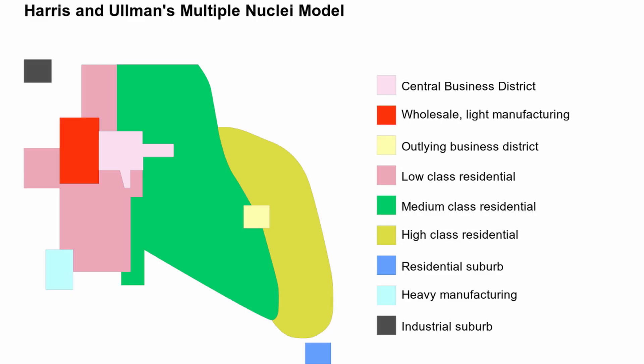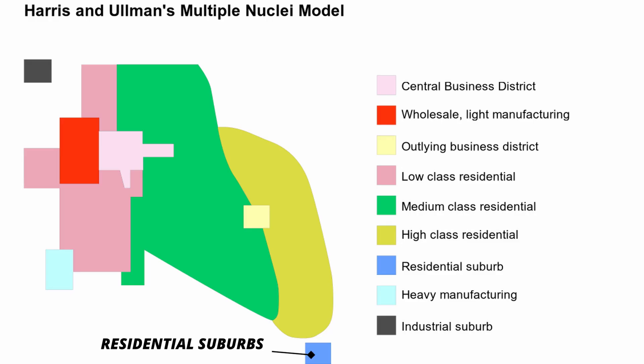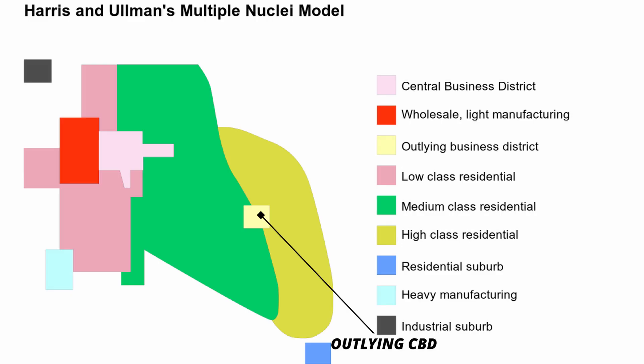Finally, we have the multiple nuclei model, which takes into consideration the use of cars and automobiles. You have your central business district and manufacturing areas — the green and light orange sections are actually next to the lower class, building on the idea that the lower class can't afford to move further away from the pollution. The residential suburbs are much further out and the upper class tends to be away from the manufacturing areas. This model takes into consideration suburbanization, and because of automobiles, you had regional development outside of the CBD, as seen with the outlying business district.